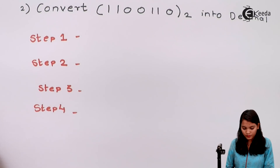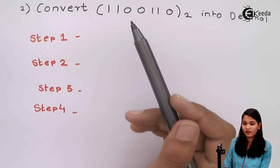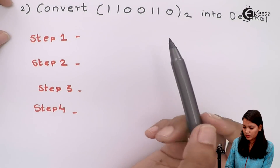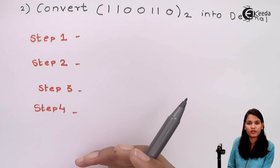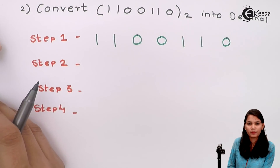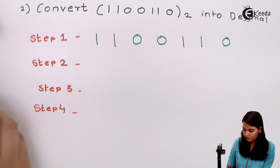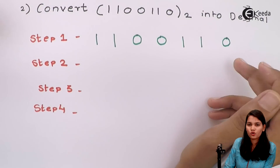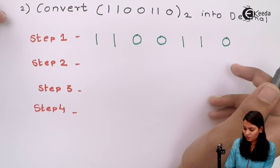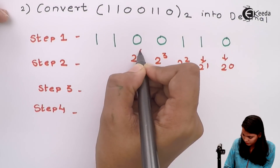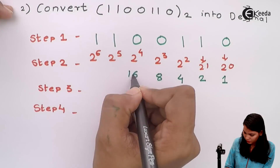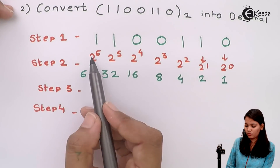Now let's see another example. The given binary number is 1 1 0 0 1 1 0. Step 1 is to write the given binary number, and step 2 is to write down the weightage values. Always start from the right hand side with 2 raise to 0. Write down weightages from 2 raise to 0 equals 1 up to 2 raise to 6 equals 64.